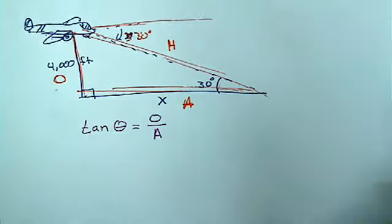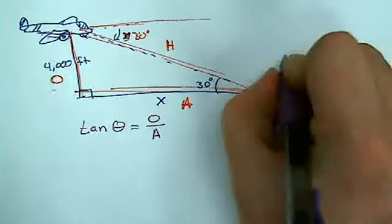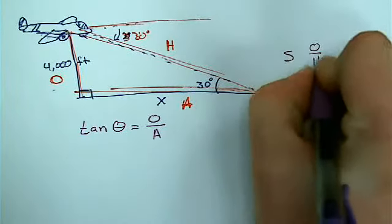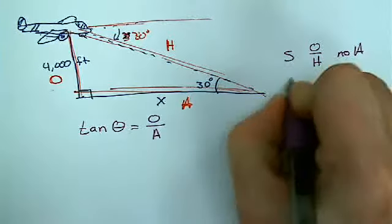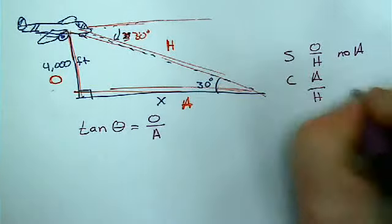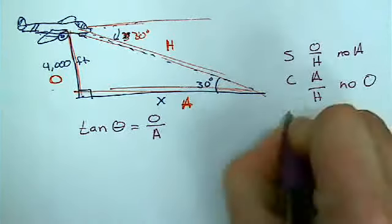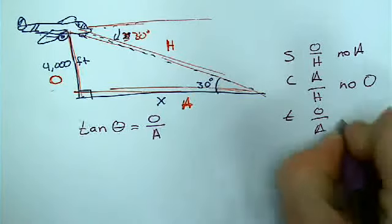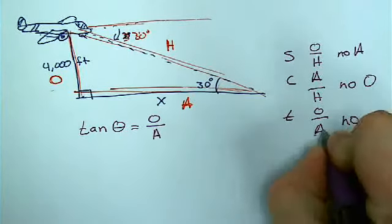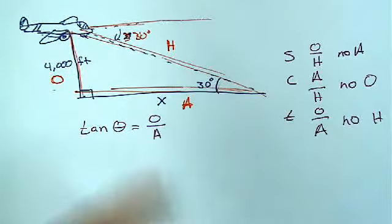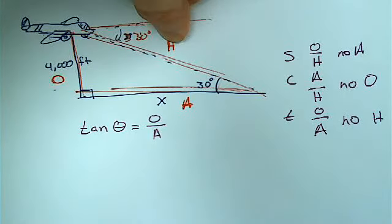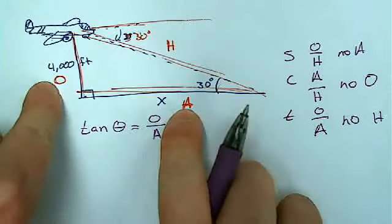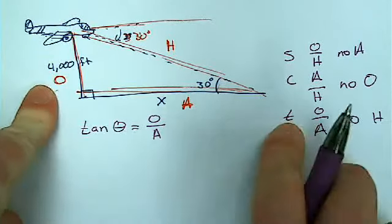One trick that I used, I've had students use when they memorize this. They write this down, and they write down which one they don't have. Cosine, no O. Tangent, no H. So when I look at this problem, we're not looking for, nor do we have, the hypotenuse. It's just not part of the problem. These two sides are, so no hypotenuse means I'm talking tangent.